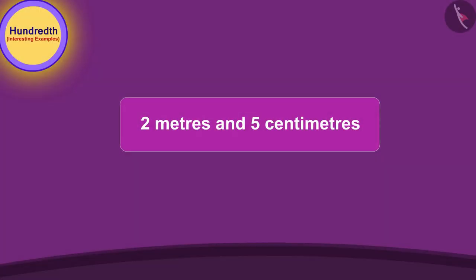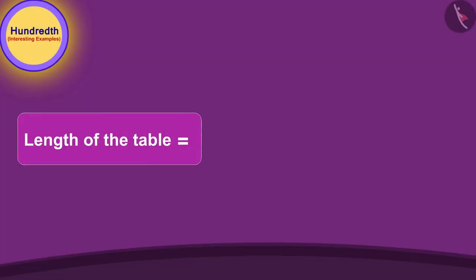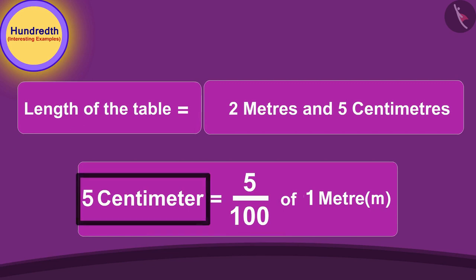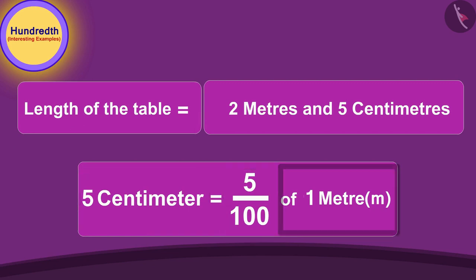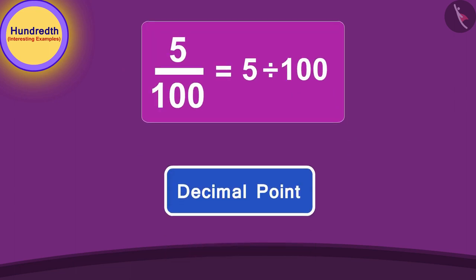Can you tell how we can write the length of this table using a decimal point? If you wish, you can stop the video and find the answer. The length of the table is two meters and five centimeters. Five centimeters is the five hundredth part of a meter — in other words, we are dividing five by 100. To write it using a decimal point, we will move the decimal point to the left once.